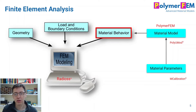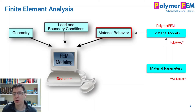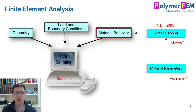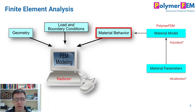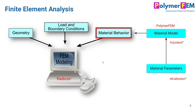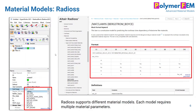There are two types of things you need to worry about when thinking about material behavior: you have the actual material model itself — which model to choose — and then the actual parameters that go into that model. One of our products, the Polyumod Library, is a library of material models that you can select for use in your FE simulation. And mCalibration is a tool that allows you to convert combinations of experimental data into parameters that you use in your FE simulation.